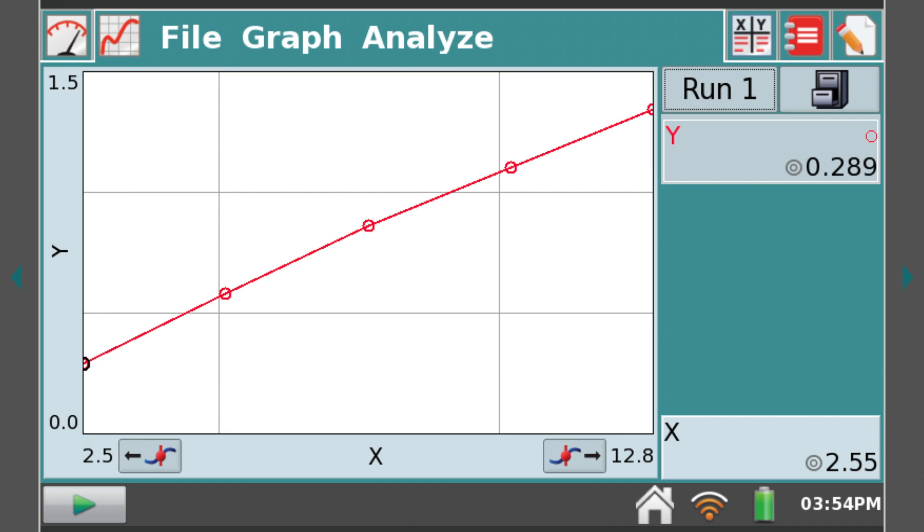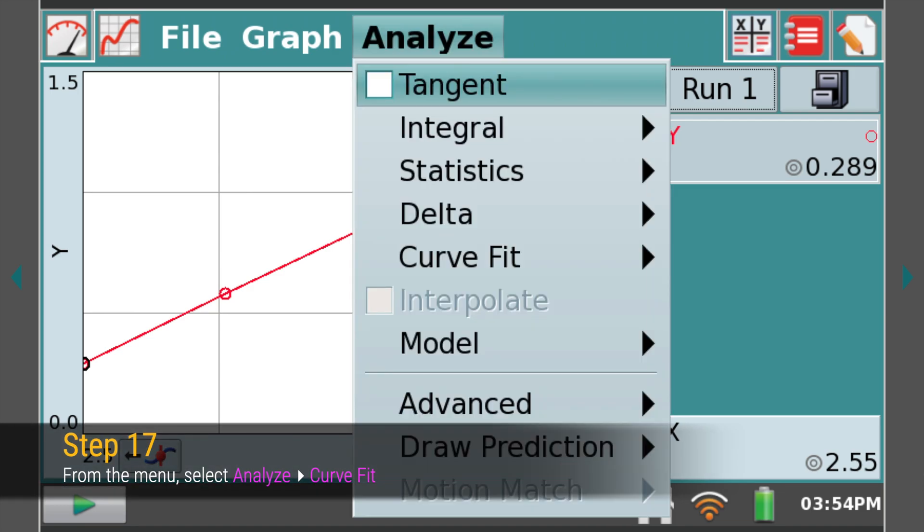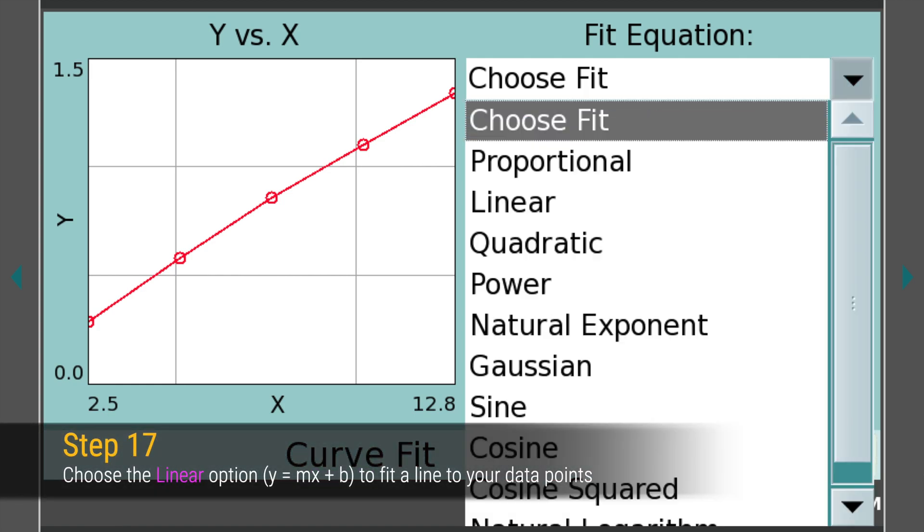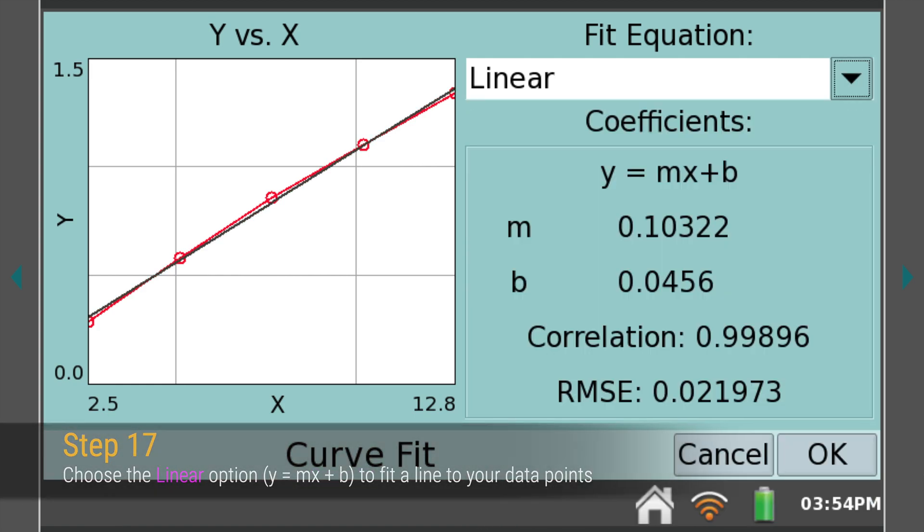To obtain the slope and y-intercept of your Beer's Law calibration plot, select Curve Fit from the Analyze menu at the top. Now select Linear from the drop-down menu, and note the values of the slope and the y-intercept for your data.